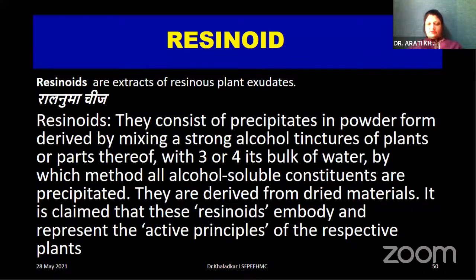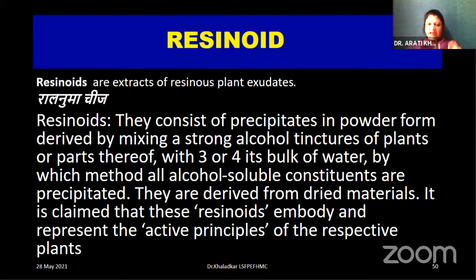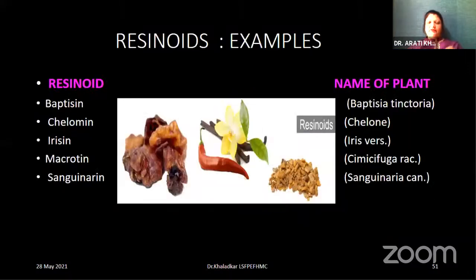Resinoids you can see on the screen: Bapticin, prepared from Baptisia tinctoria. Chelidonin, from Chelidonium. Irisin, from Iris versicolor. Macrotin, from Cimicifuga. And sanguinarin, from Sanguinaria canadensis. These are important resinoid examples. Next we go on for the gum resins. The one and only gum resin prepared is Asafoetida — naturally occurring substances, milky exudates, usually collected in the form of tears or irregular mass. Tapping the plant also produces the same. Asafoetida is very commonly called as hing in vernacular language.